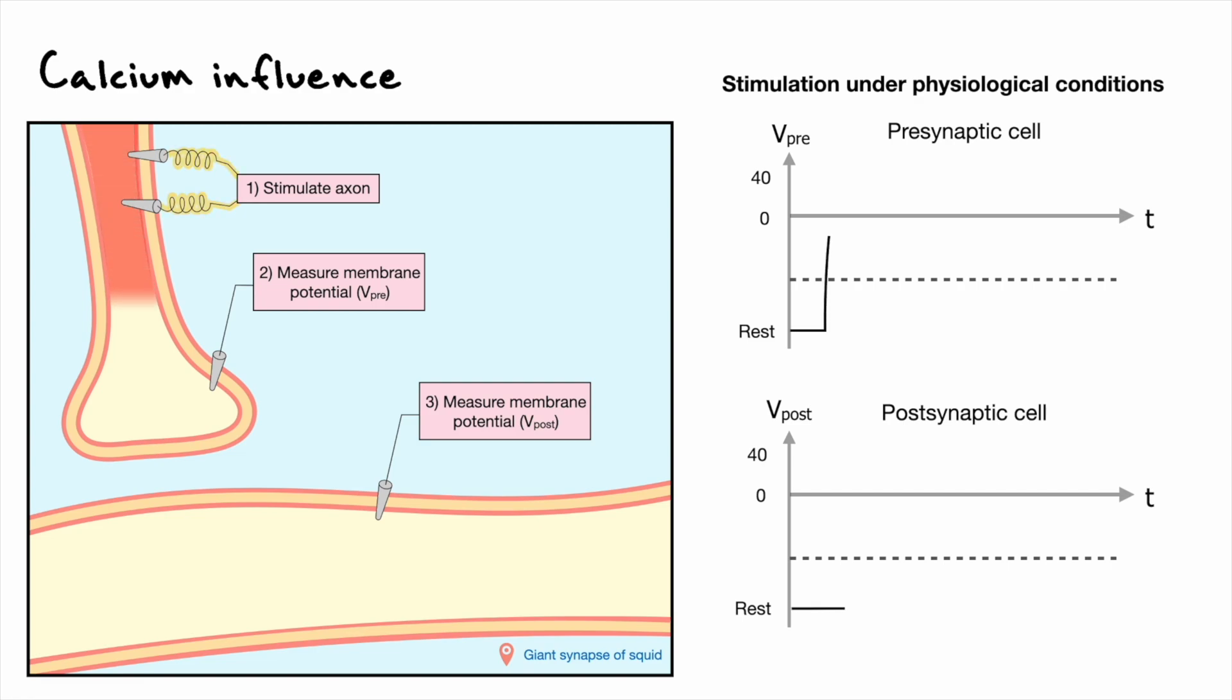When an action potential is generated in the pre-synaptic cell, the excitatory post-synaptic potential is usually strong enough to cause an action potential in the post-synaptic cell after a small delay.